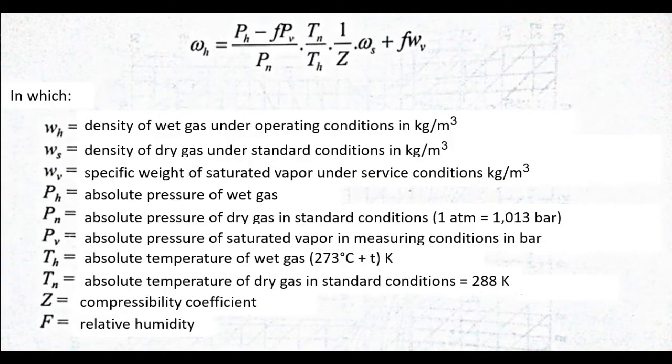The addition of steam to a certain amount of dry gas influences the flow rate corresponding to a given differential pressure in two ways. One, the density of wet gas changes relative to that of dry gas. Two, the measured gas is only a part of the mixture that passes through the element.